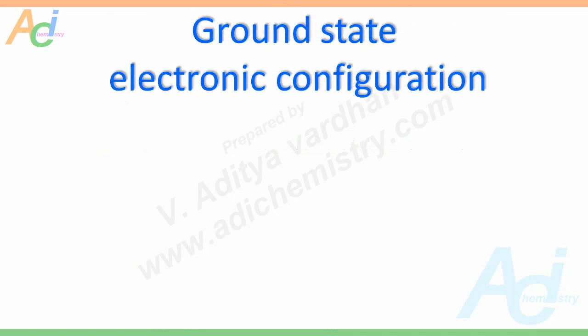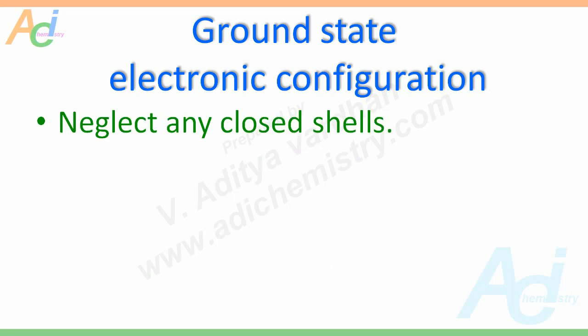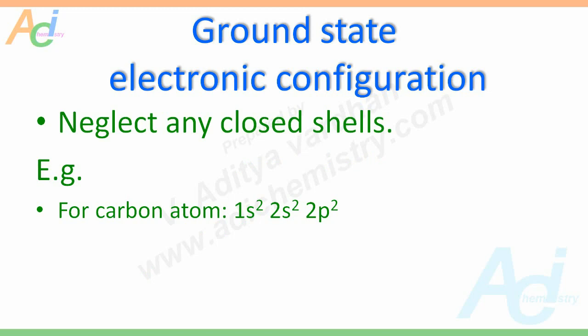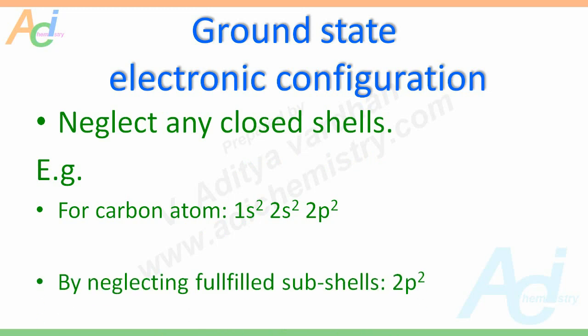Now let us see how to derive the ground state term symbol. The first step is to write the ground state electronic configuration for a given atom or ion. While writing the electronic configuration, we have to neglect any closed shells. For example, for the carbon atom, the configuration is 1s², 2s², 2p². Since the 1s and 2s sublevels are fully filled, we neglect them and write only the 2p² configuration.